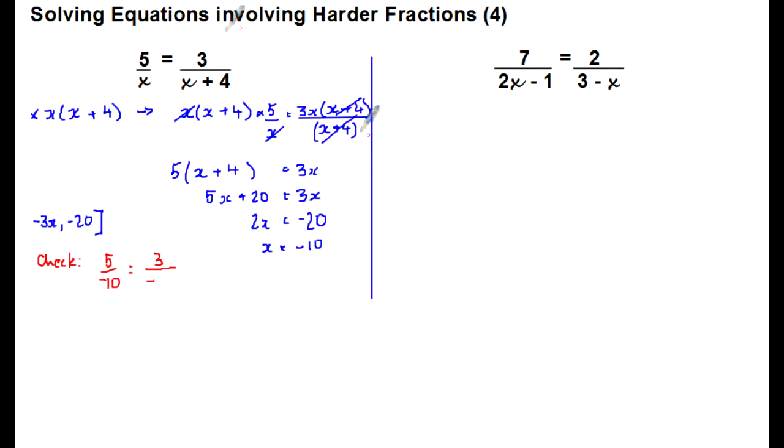Easy peasy. So 5 over minus 10 is equal to 3 over minus 10 plus 4. And the right-hand side calculates to 3 over minus 6. And both sides look at minus 1 half. So the left-hand side is equal to right-hand side, and so x is minus 10 is the right answer. Brilliant.